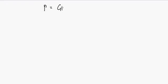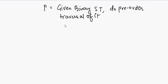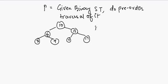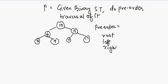Today we will be discussing a problem on binary search tree: pre-order traversal of a binary search tree. The problem statement is, given a binary search tree, do the pre-order traversal of it. Pre-order traversal means first traversing the root, then the left child, and then the right child.